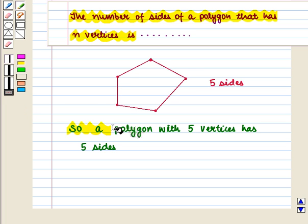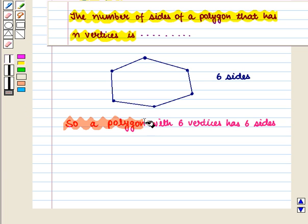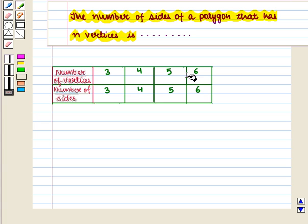So we can say that a polygon with five vertices has five sides. Now let us take six points. Now we join these points. We see joining these points gives us a polygon having six sides. So a polygon with six vertices has six sides. So we have got the following pattern.